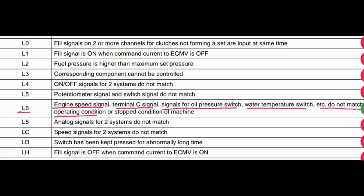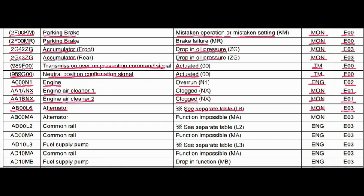Code AB00MA. Where is the problem? Alternator. What is the problem? Function impossible. Monitor panel control is related to this fault, and the action code is E03.